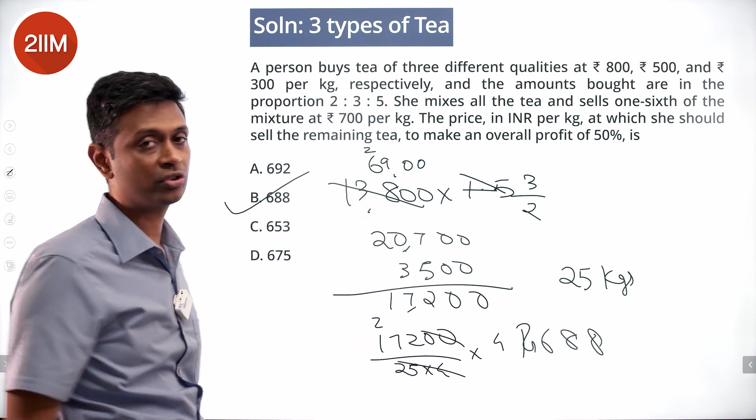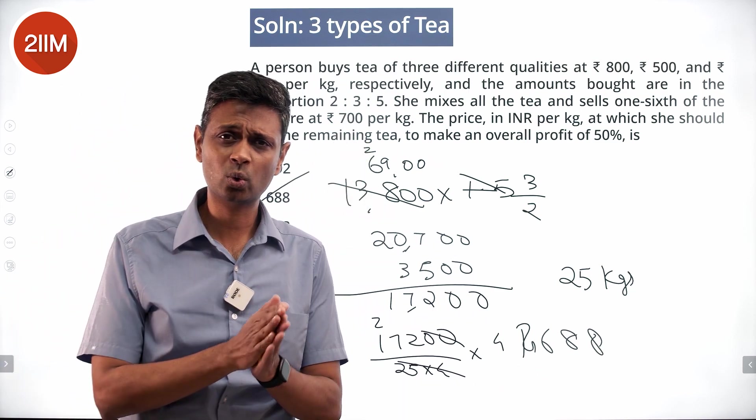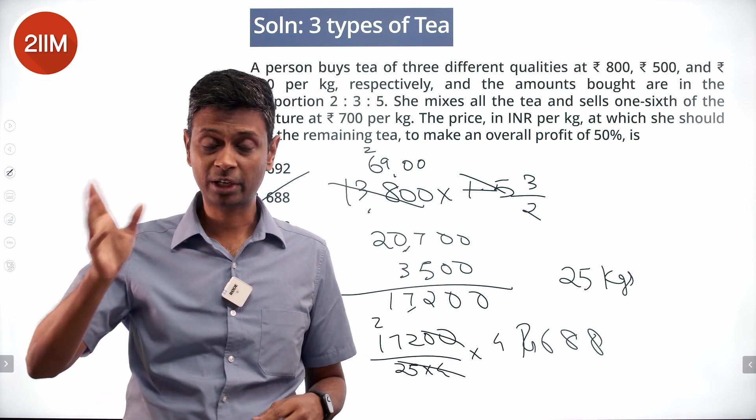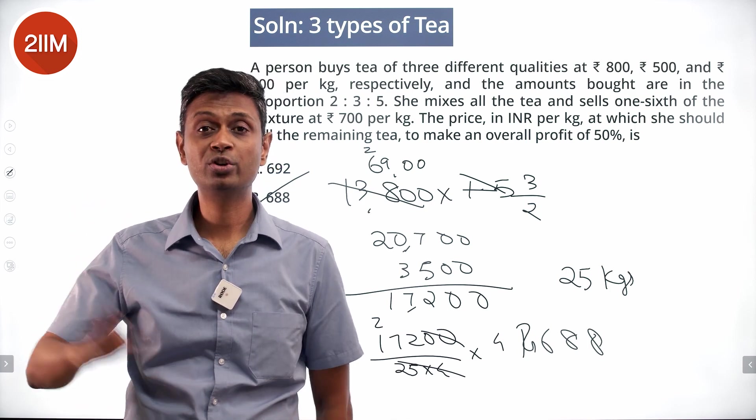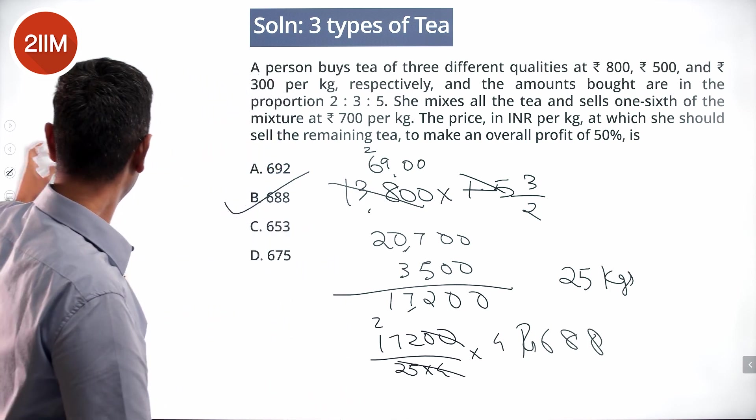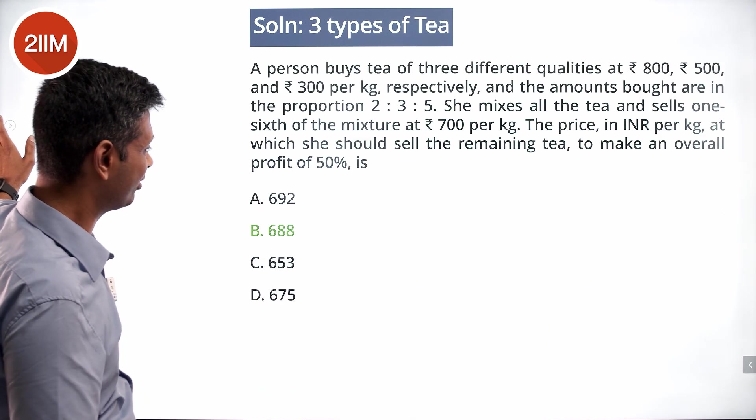Yup, that is there in the choices here too. Very routine question. Find the total cost, find the total selling price. She has already sold some. What should we sell the remaining at? We have chosen the number of kilograms in order to make that one-sixth easier.